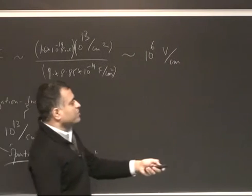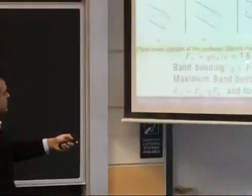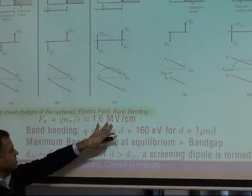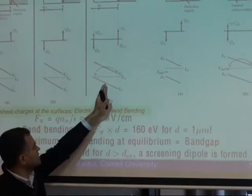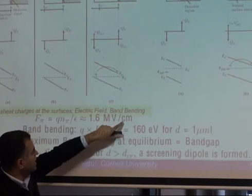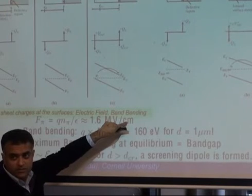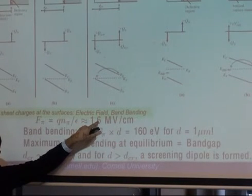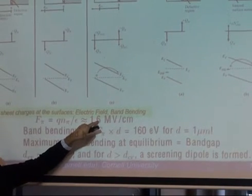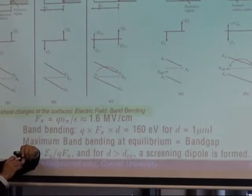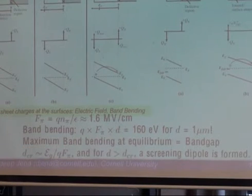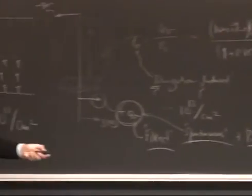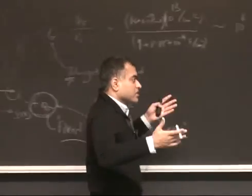What is the order of this field? You put in roughly 10^13 per cm² times the electron charge, divided by the dielectric constant of gallium nitride, which is roughly 9. You get of the order of 10^6 volts per cm — about a megavolt per cm. So within 1 nanometer you drop about 0.16 volts, or 160 meV. Within 10 nanometers you're dropping 1.6 eV. The band gap of gallium nitride is about 3.4 eV, so within about 30 nanometers the band has bent by the entire band gap.